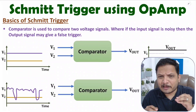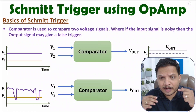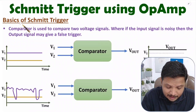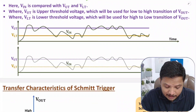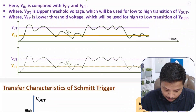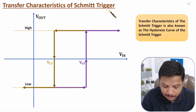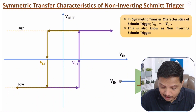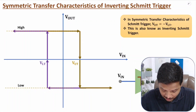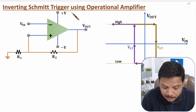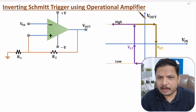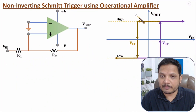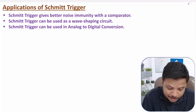I will be explaining a few essential fundamentals based on Schmitt trigger. So before I start, let me show you what I am going to cover. First, I will explain the basics of Schmitt trigger. After that, I will explain working of Schmitt trigger by waveforms, and based on waveforms, I will explain the transfer characteristics. After that, I will explain symmetric transfer characteristics of non-inverting and inverting Schmitt trigger. Then I will explain inverting and non-inverting Schmitt trigger using operational amplifier, deriving output equations. And at last, I will explain applications of Schmitt trigger.